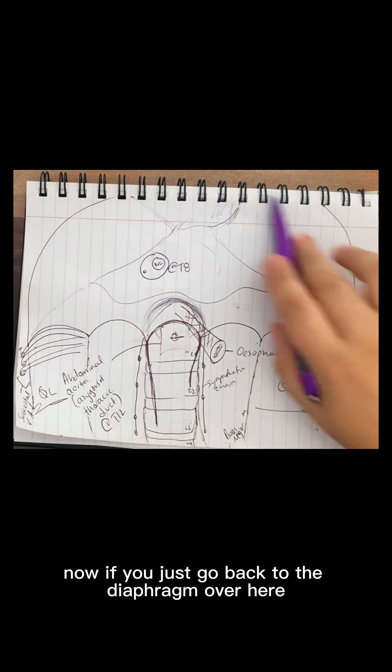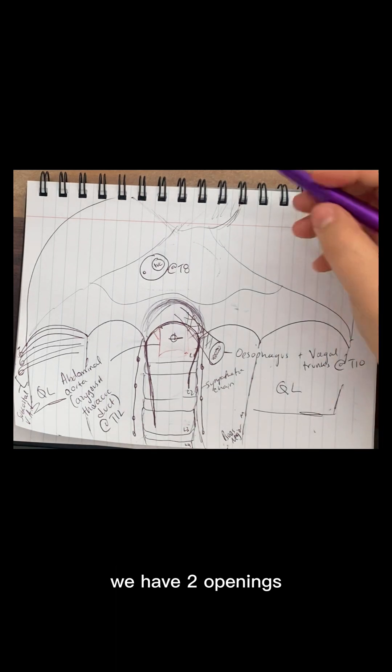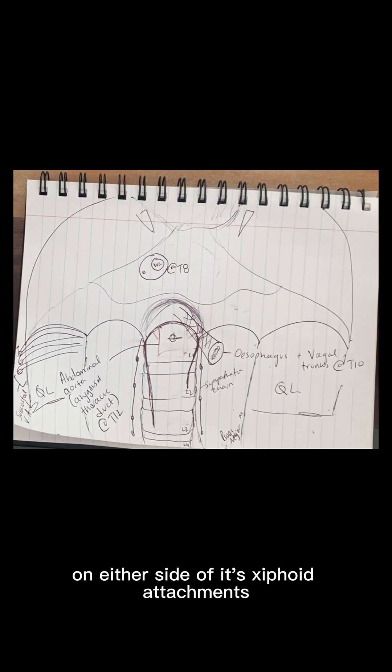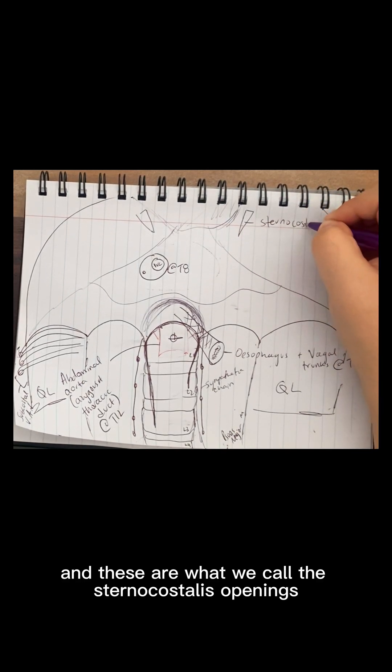Now, if you just go back to the diaphragm over here, and we talk about the other minor openings, we have two openings on either side of its xiphoid attachments. And these are what we call the sternocostal openings.